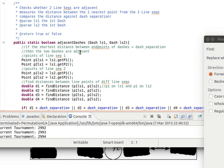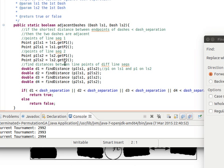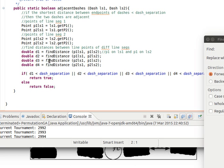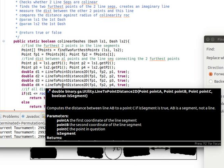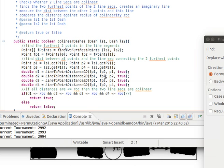This is the utility class. For example, adjacent dashes, they receive two parameters of type dash. And then it makes, this one checks whether they are adjacent or not. So, we start comparing the distance between them against the dash separation distance. And the other one, which is the collinear dashes, it just checks, basically, it draws an imaginary line between the furthest two end points of the two dashes. And then checks the other two points, how far they are from that line, against the radius of collinearity, this ROC variable.